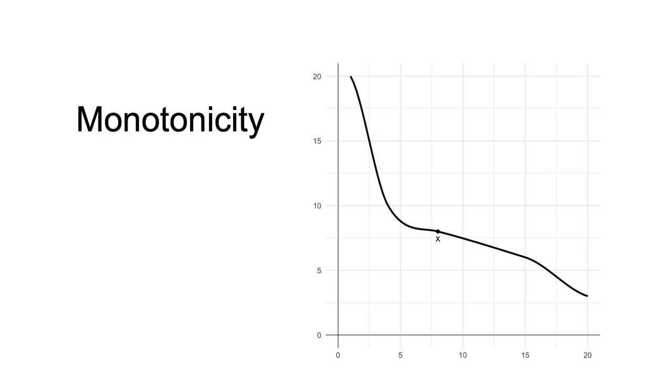This can be seen in this diagram. Point X lies on the indifference curve. Increasing the amount of either good will take you to a higher indifference curve. That is true for all points on that indifference curve.